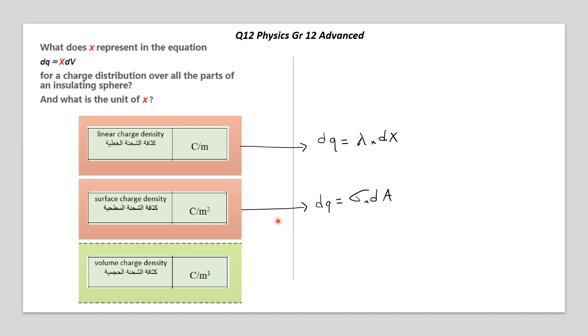Here we are with dQ equals sigma dA, and A here represents the area. Also, that's not the case.